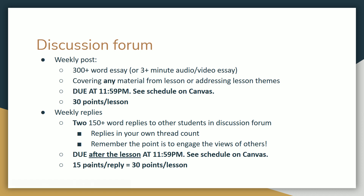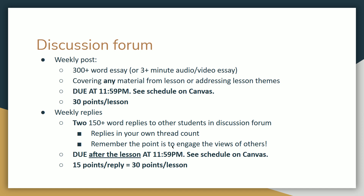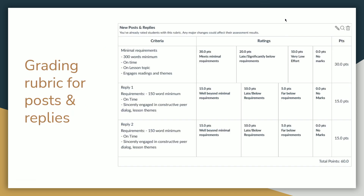Posts are due on Friday and your replies are due the following Tuesday at midnight. When the replies are due, I also want you to submit everything to the plagiarism detection. The post is worth 30 points and the replies are each worth 15 points, so combined they're worth 60 points for your discussion forum. You'll lose points if you're late, well under the word count, or not deeply engaged with the lesson themes. Assignments that are clearly rushed right before the deadline will also fall in that group.